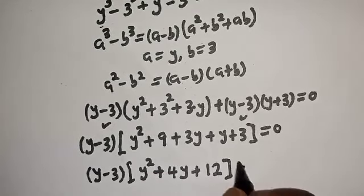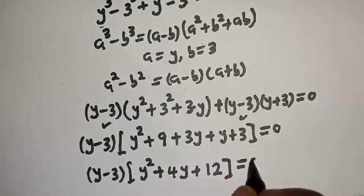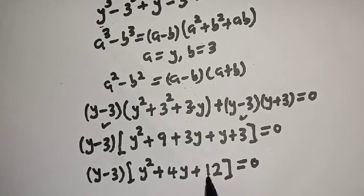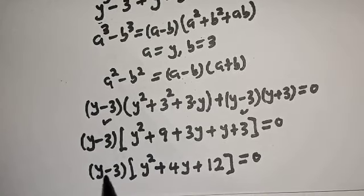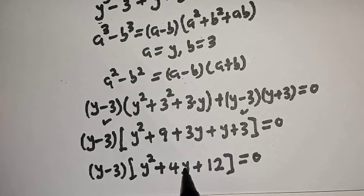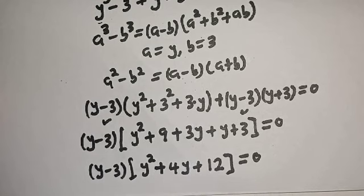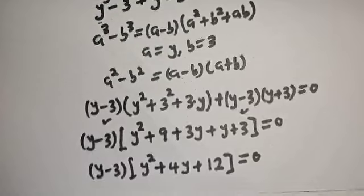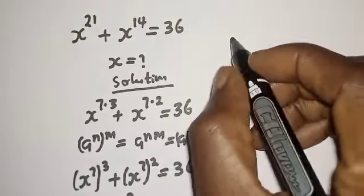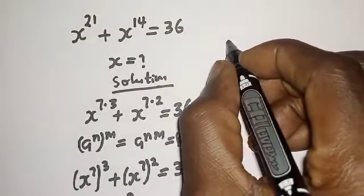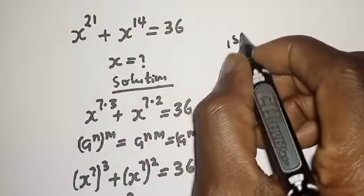There are two cases. The first case is y minus 3 equals 0, and the second case is y squared plus 4y plus 12 equals 0. Let's work on each case.